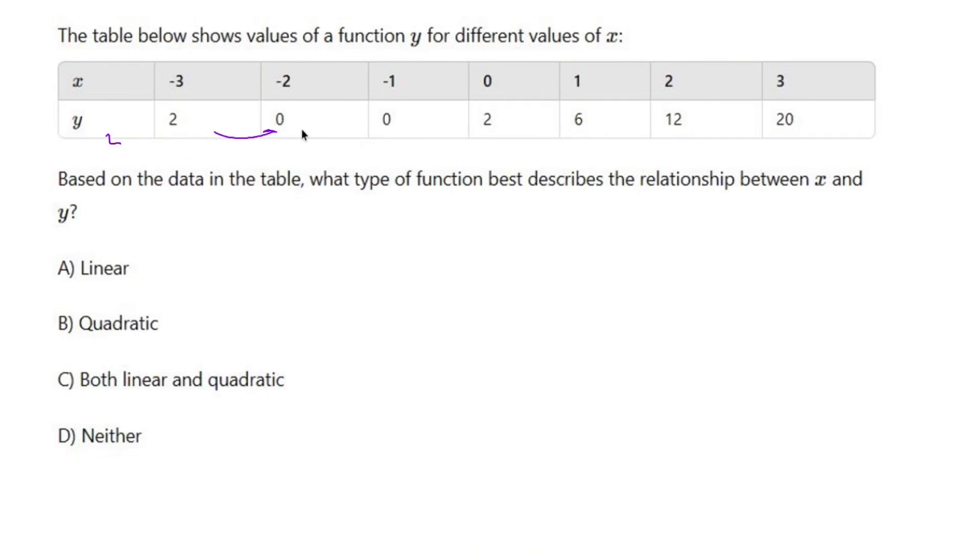All right, well, if it's linear, then these guys are going to go up by the same number every single time. So let's see if these guys go up by the same number every time. 2 to 0 is negative 2. 0 to 0 is 0. So it's definitely not linear.